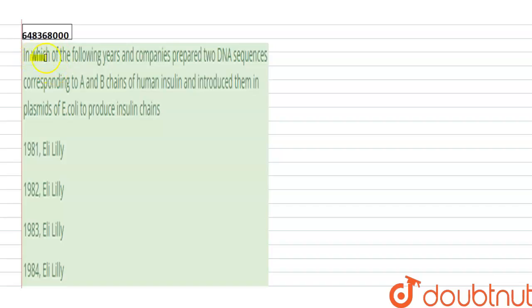Hi, the question is: In which of the following years and companies prepared two DNA sequences corresponding to A and B chains of human insulin and introduced them in plasmids of E. coli to produce insulin chains?